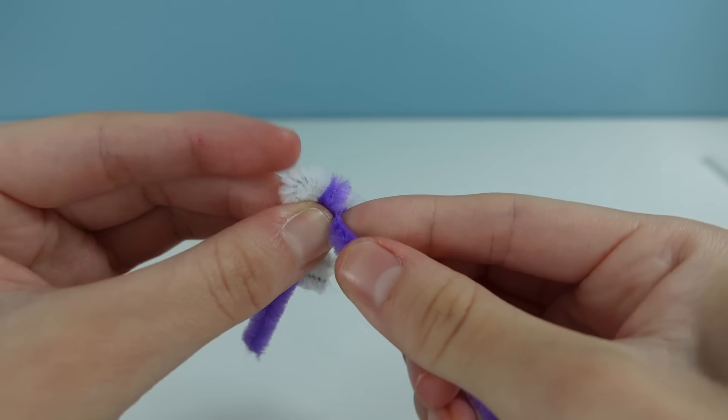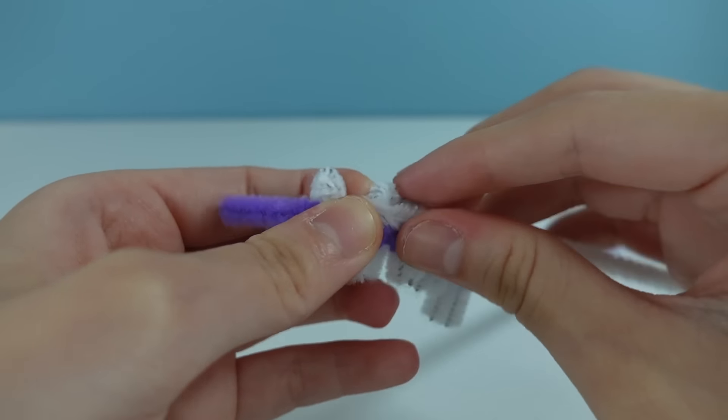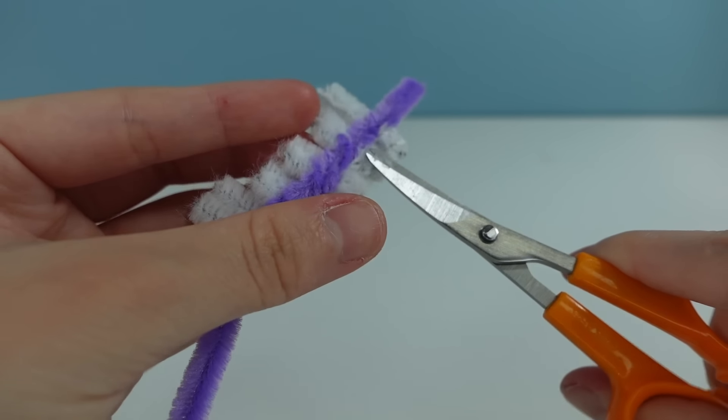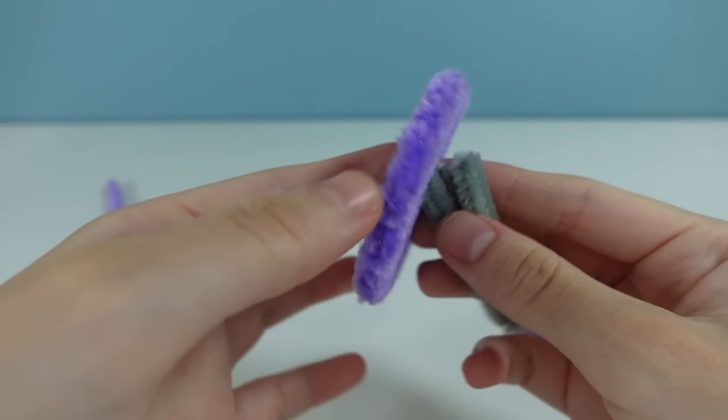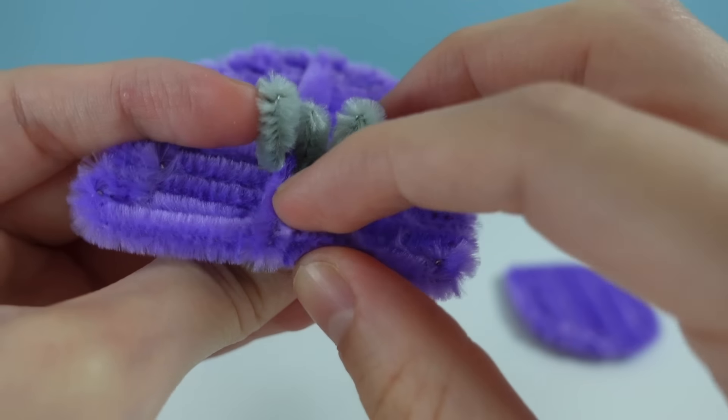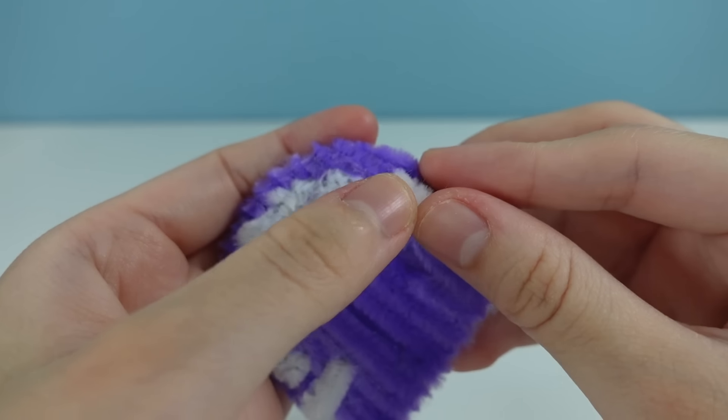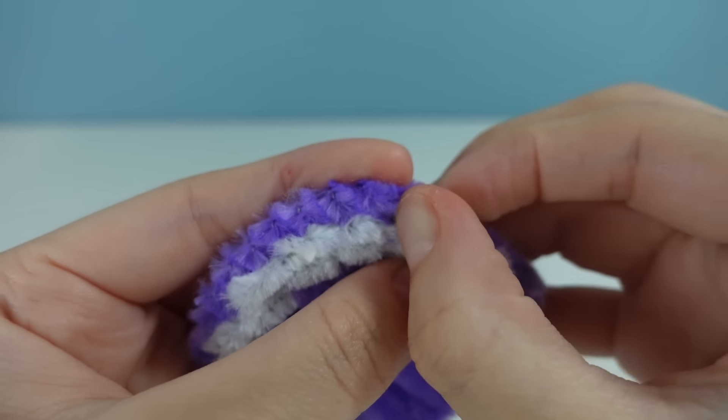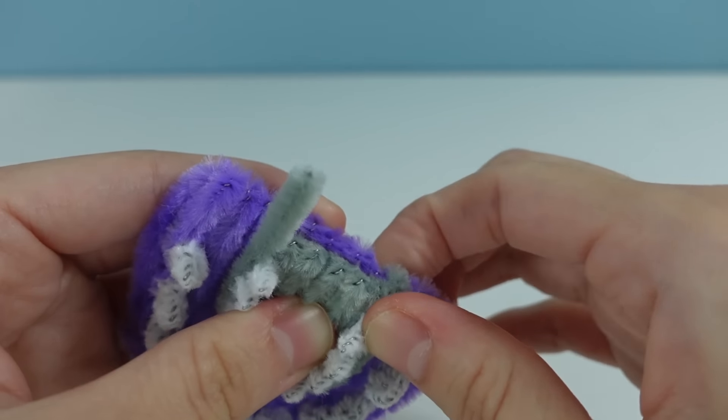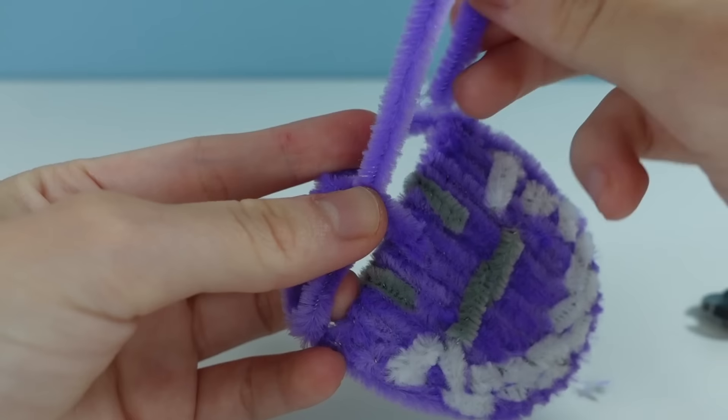The teeth are always fun to make because I weave a pipe cleaner between some white pipe cleaners that are bent in half, and at the end it's a perfect line of teeth that I can connect to the jaw. When the teeth are done, I also have to make a miniature jaw with teeth for the endoskeleton. Then since the jaw wasn't big enough, I extended it at the back and made it rounded so it looked more complete.